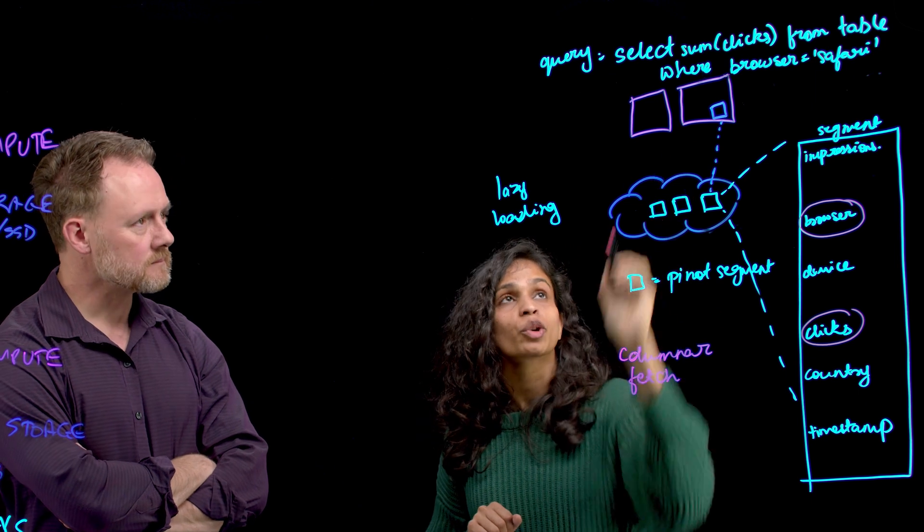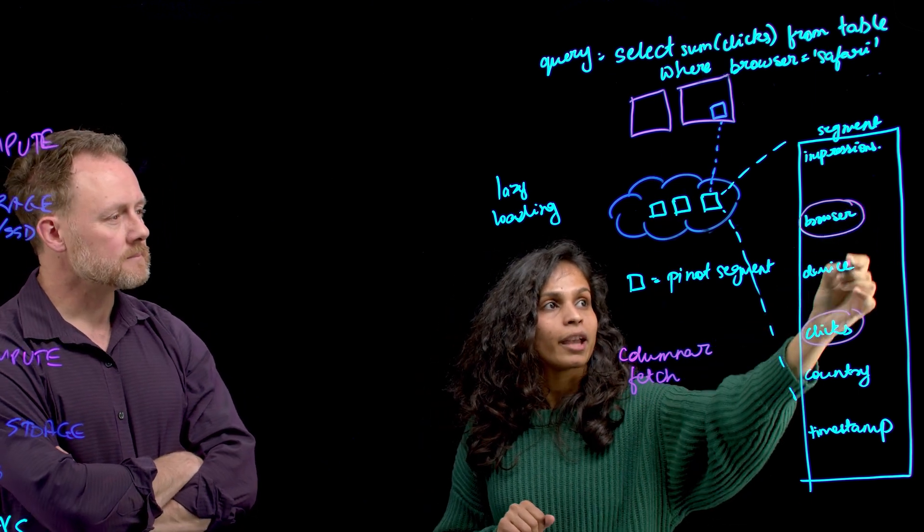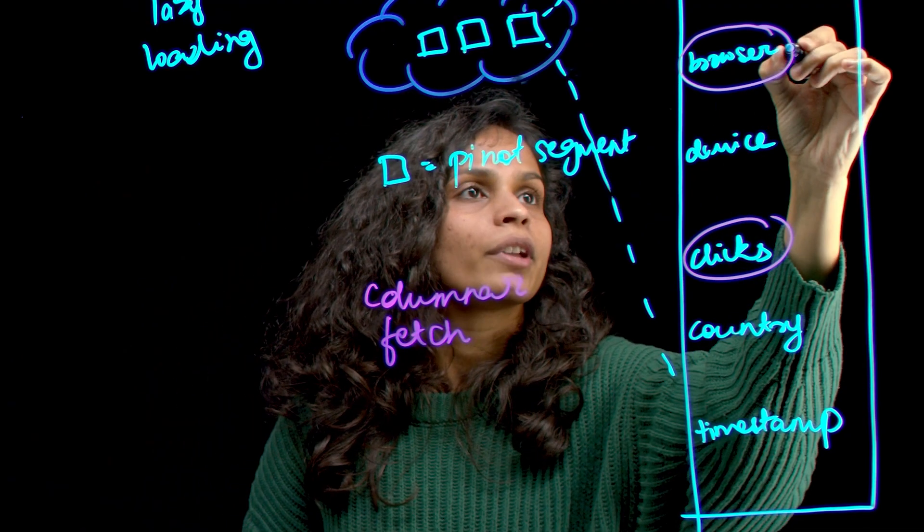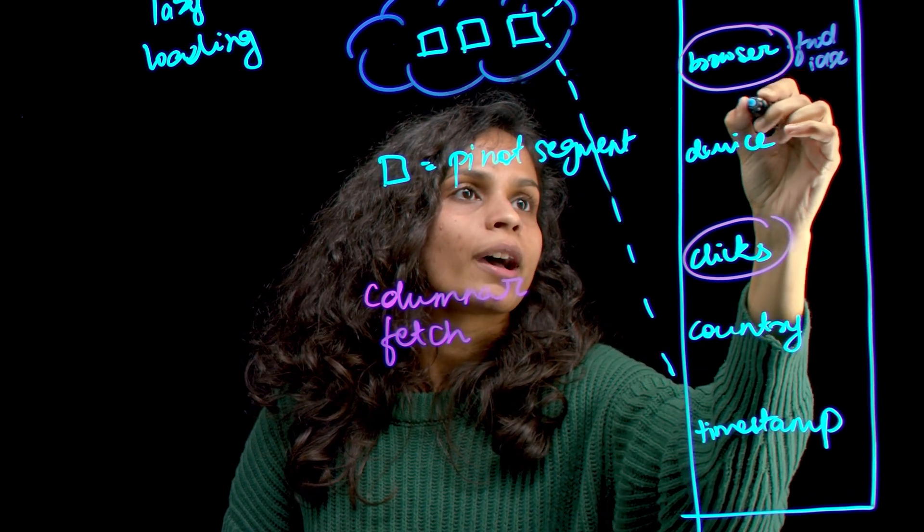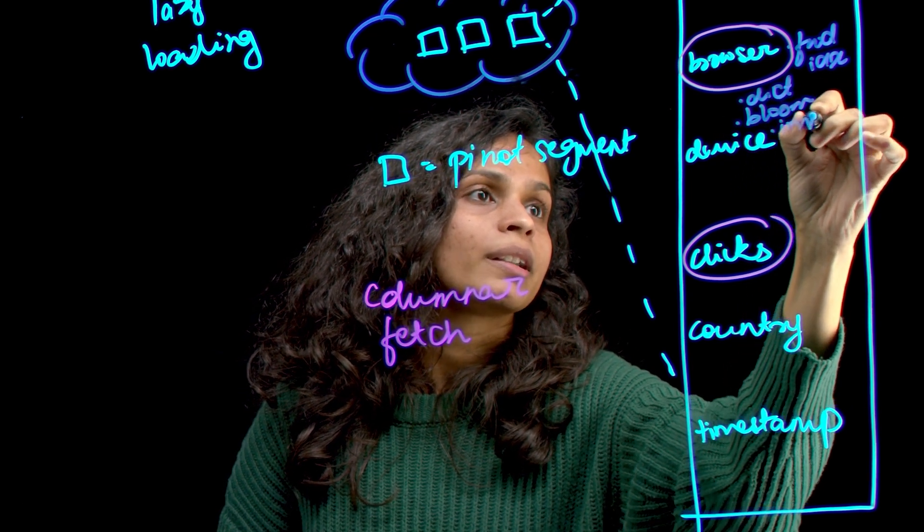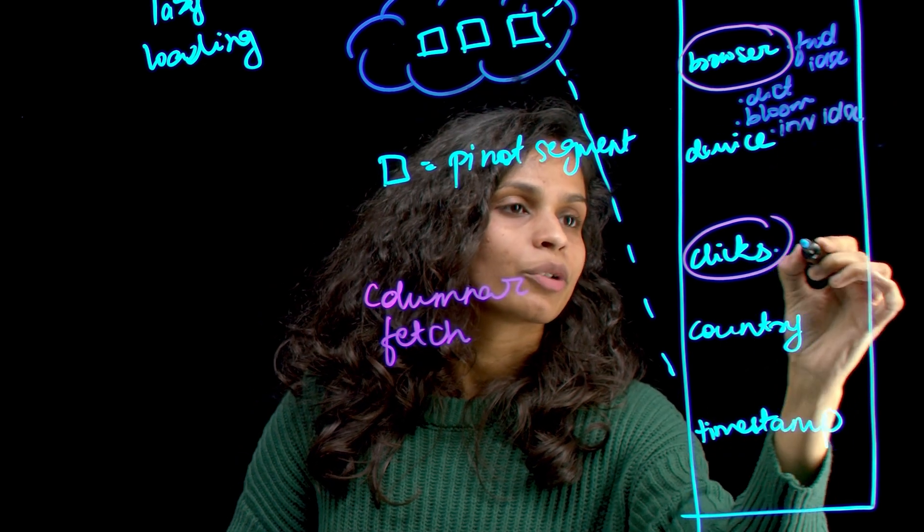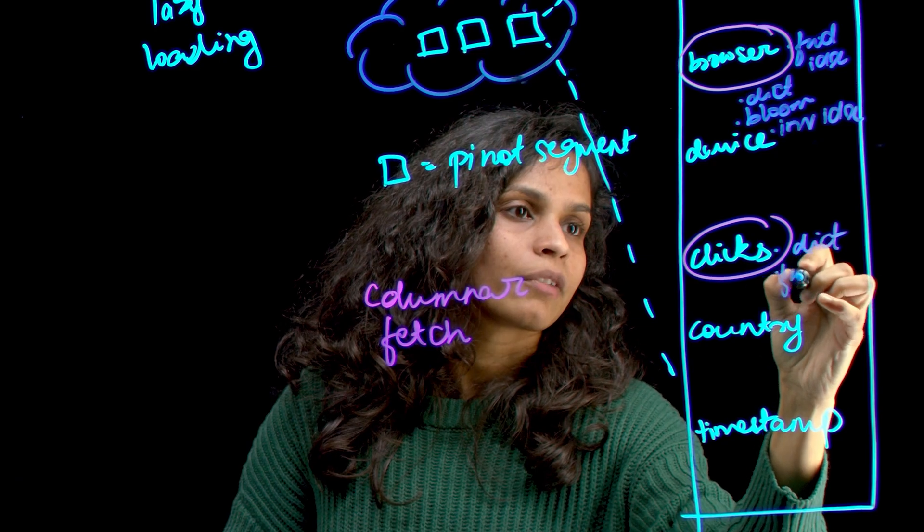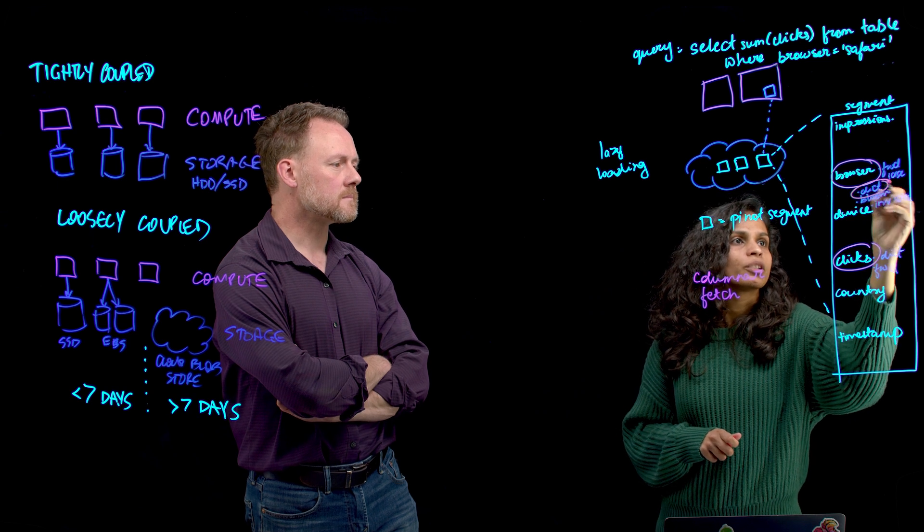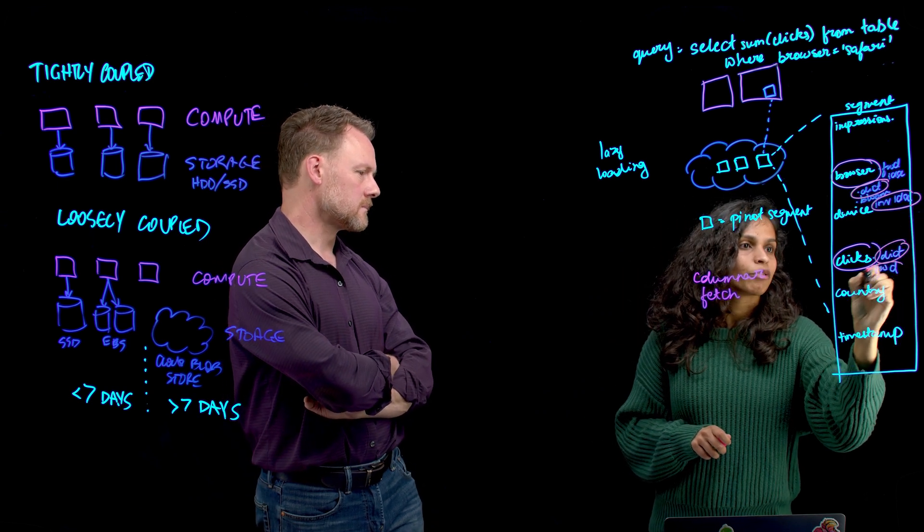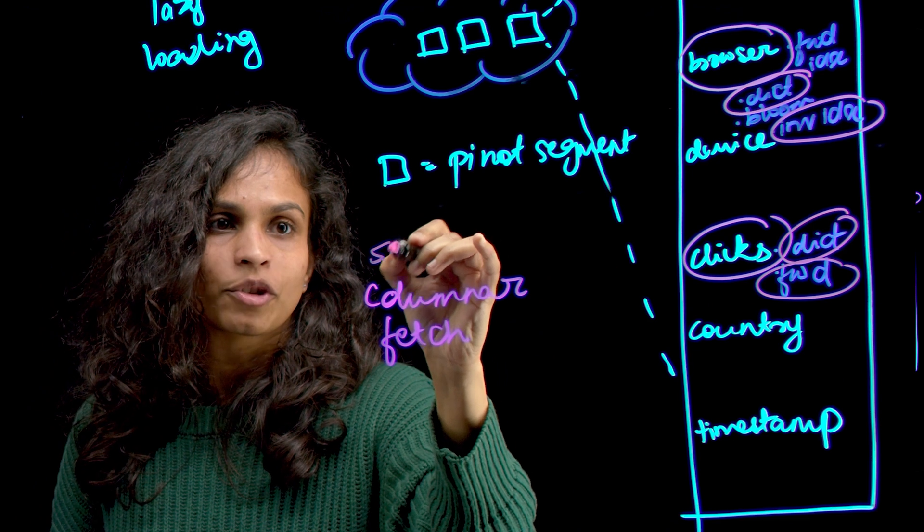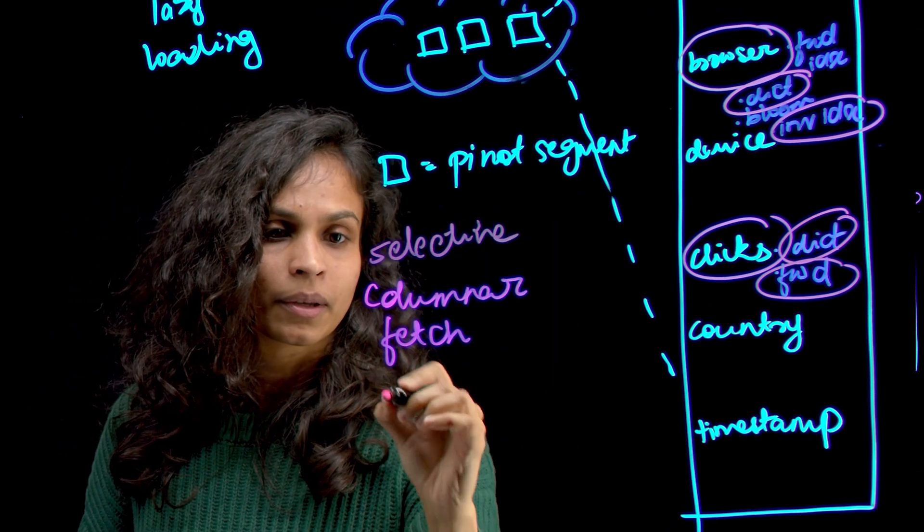And we don't just stop there. Based on the query, we also know that maybe we don't need everything that we have for the browser. And by everything, I mean inside the segment, we could have a forward index, we could have a dictionary, we could have a bloom filter, we could have an inverted index. Similarly for clicks, we could have a dictionary again, we could have a forward index. And we already know that we have a filter on browser. So probably we only need dictionary and the inverted index for browser. And we need the dictionary and forward index for clicks. So we're doing a selective columnar fetch, based on the query.